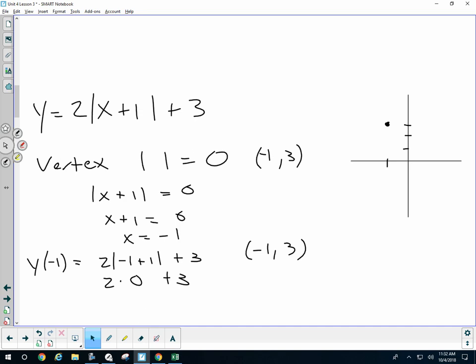Following how I got that, negative 1, 3 is the absolute value when it's a minimum. That will produce a minimum value for my function.